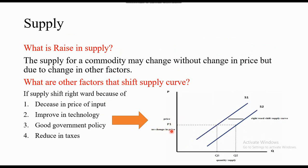When there is no change in price, there is no extension or contraction. Other factors shift the supply curve. For example, if input prices decrease, the producer's cost is lower and they supply more — supply increases from Q1 to Q2. If technology improves, or government policy is favorable — low electricity prices, low gas prices, lower taxes — the producer will increase supply. When supply increases due to these other factors, the supply curve shifts rightward — this is called a rightward shift, from S1 to S2.